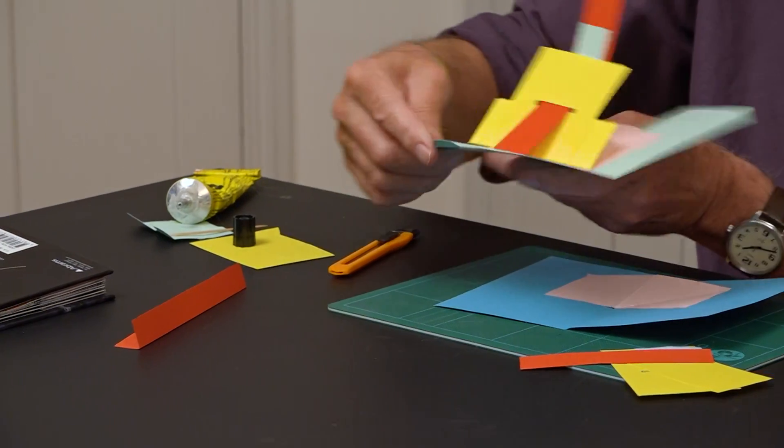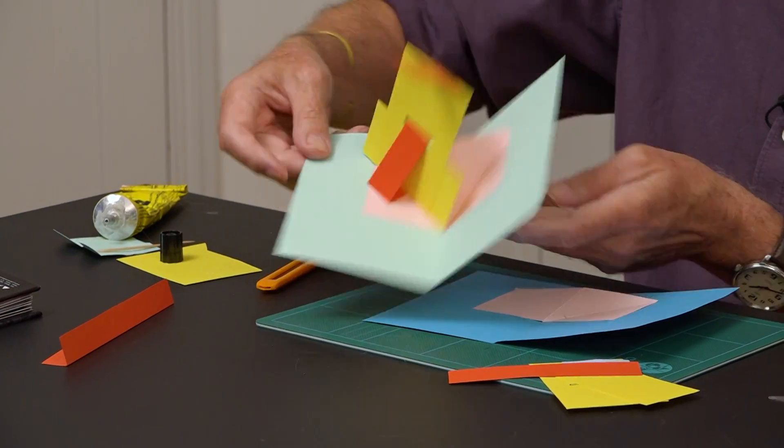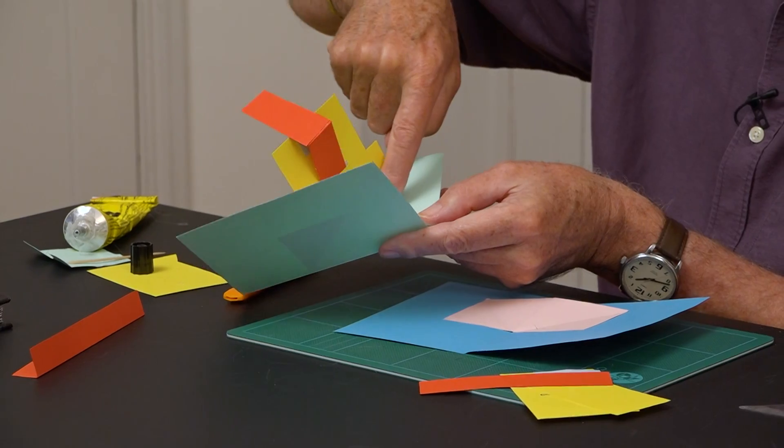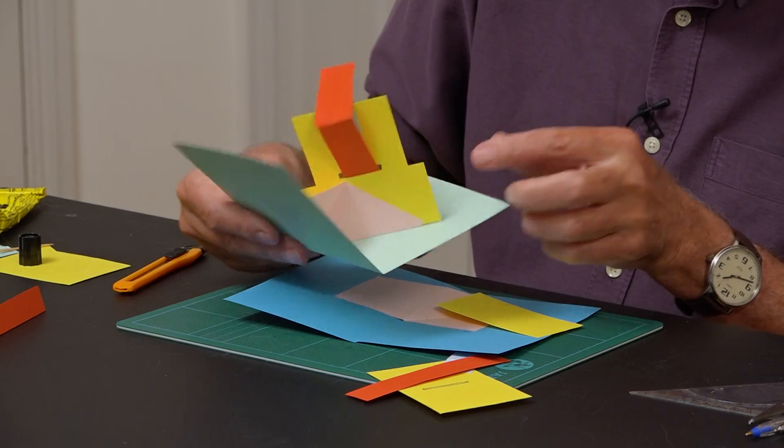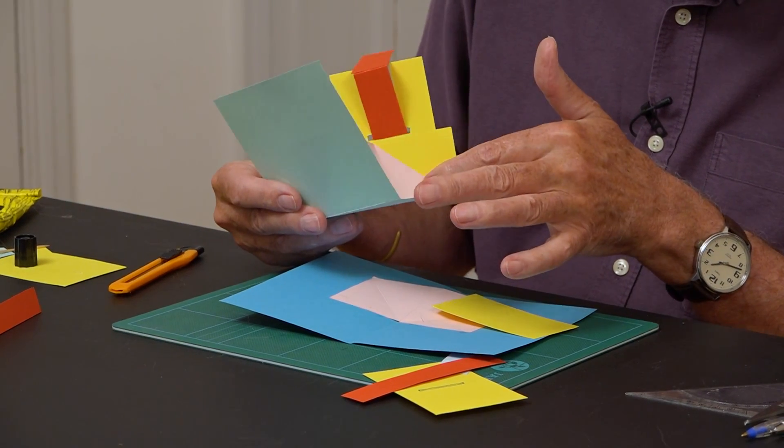So now you'll see that this yellow piece is stuck to one side of the V-fold. So here's the yellow piece I'm going to add on. And you can see that yellow piece is glued to one side of the V-fold.